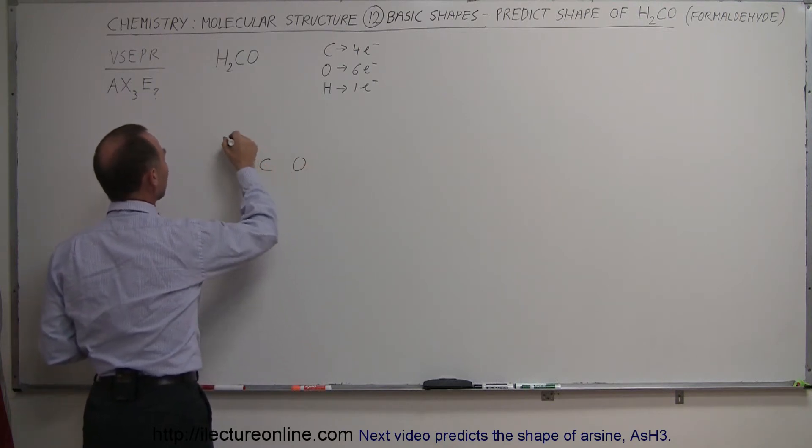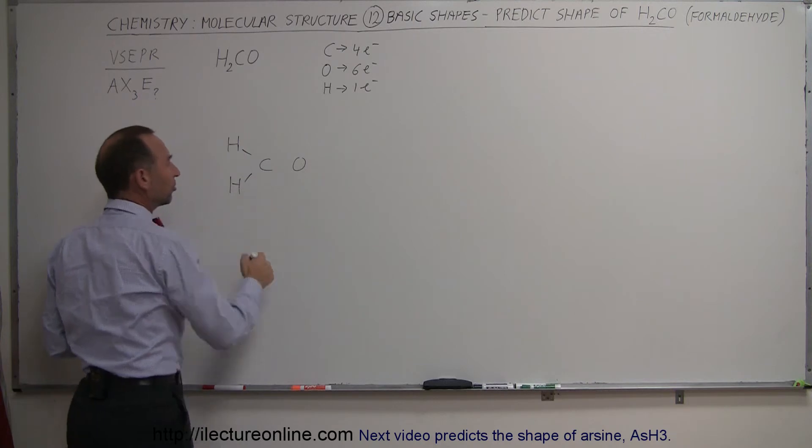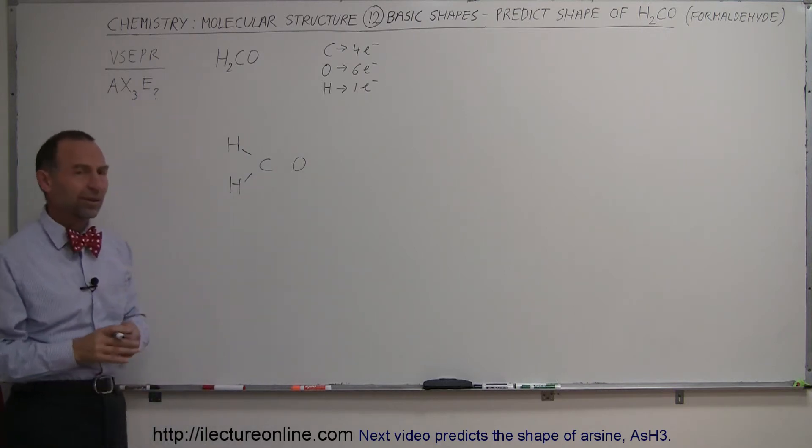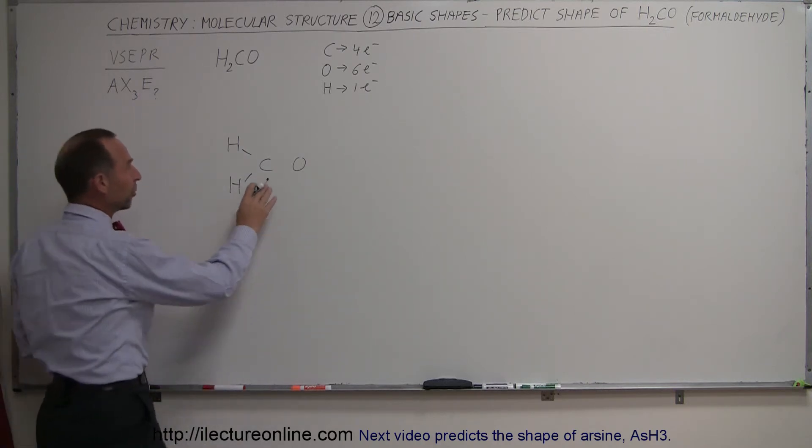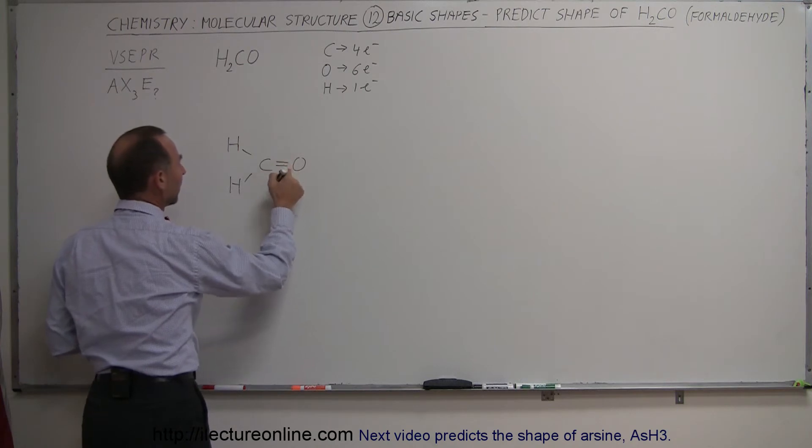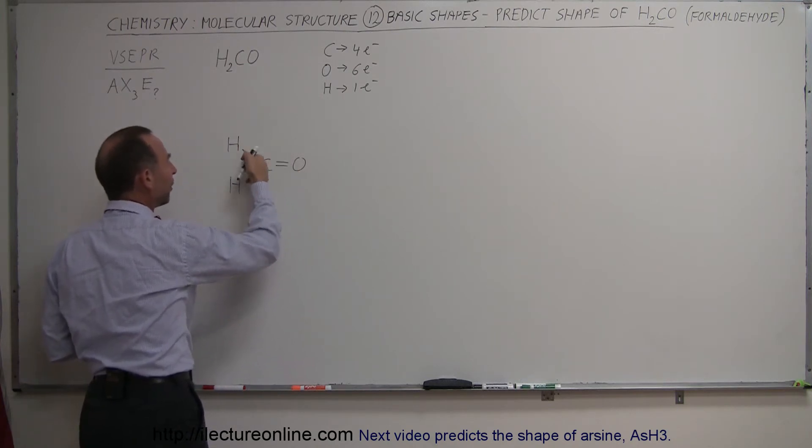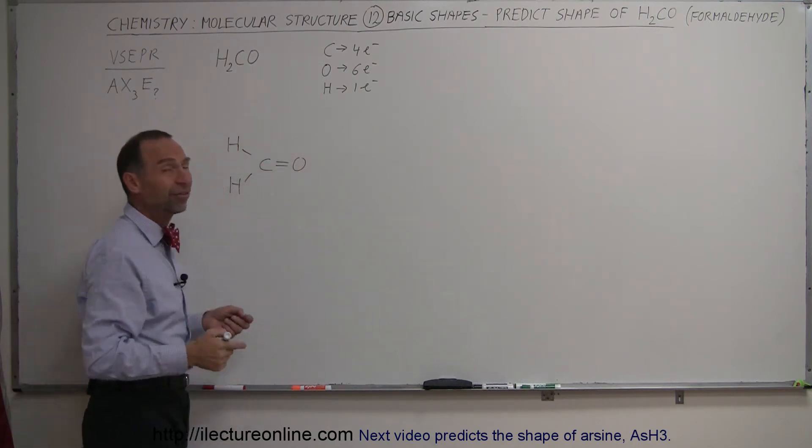So we'll put oxygen on one side, the two hydrogens on the other side, probably something like that, single bond with the hydrogen, and oxygen, since it has six valence electrons, it wants to have eight, it probably wants to form a double bond with carbon. That means that carbon now has four bonds, using up all four of its valence electrons.